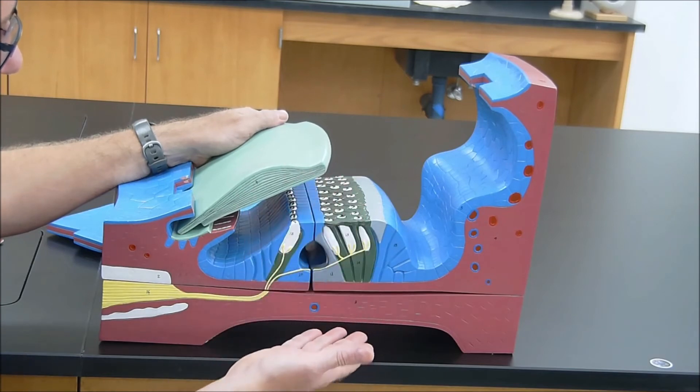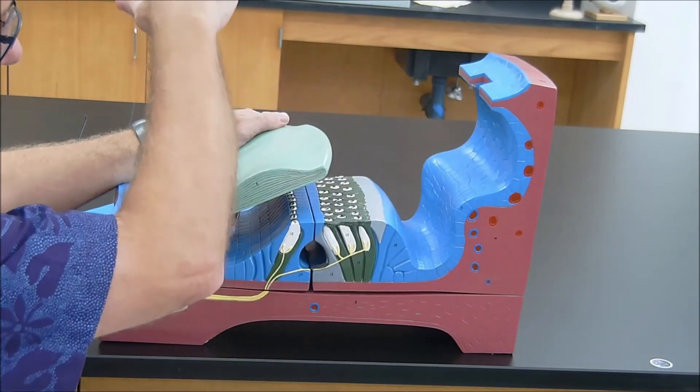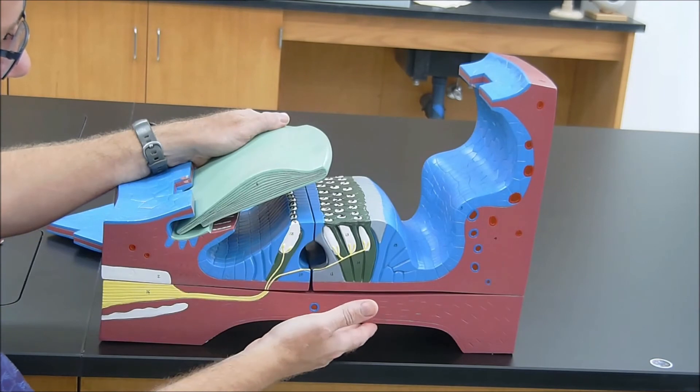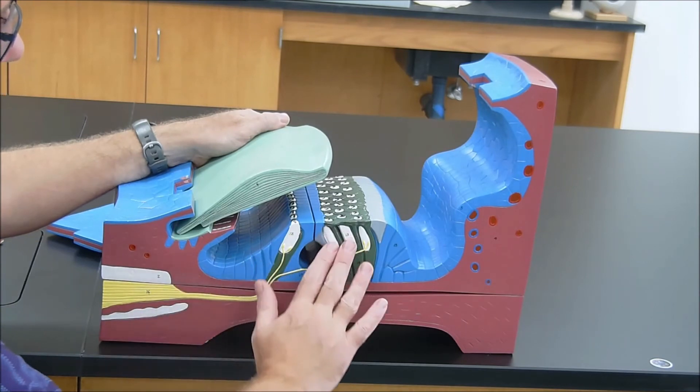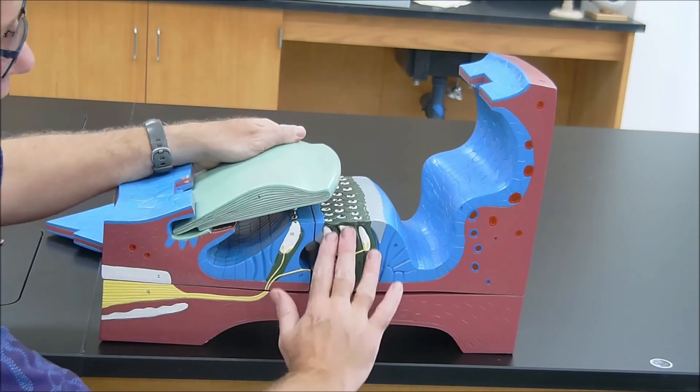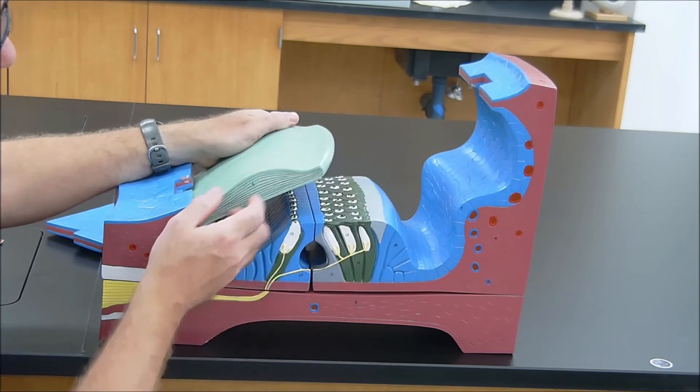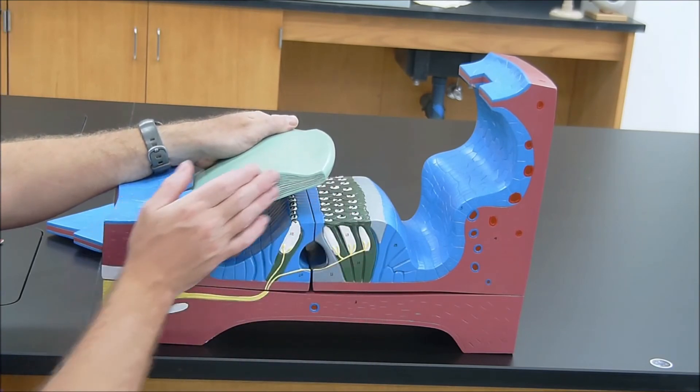Now, the important thing to realize is as sound waves move through the scala vestibuli and scala tympani, they're going to vibrate that basilar membrane, and those vibrations are going to cause our hair cells, the hairs on them, to interact with this membrane right here called the tectorial membrane.